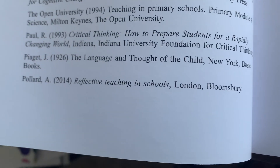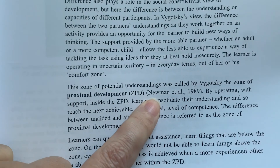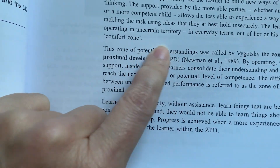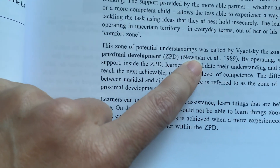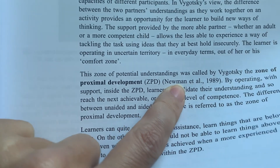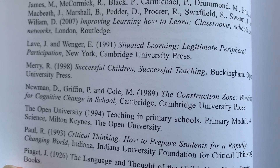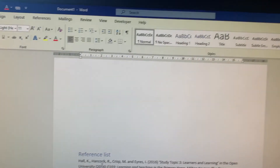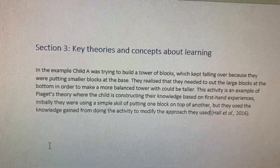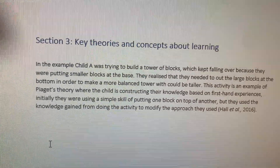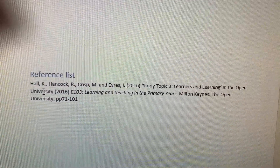Likewise, this description of the zone of proximal development has been taken from a piece of work by Newman, and if I go to the back there's the full citation for Newman. In essence, all you're doing is putting a reference that shows where you've got the information from — that's the in-text reference — and the reference list gives you the full details.